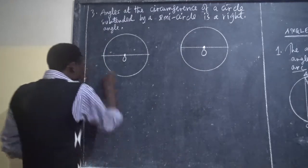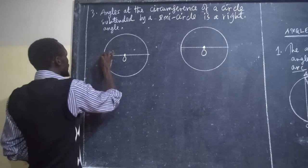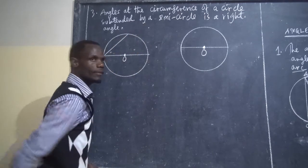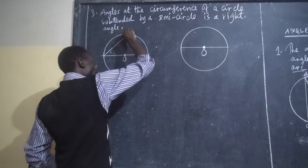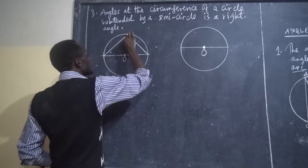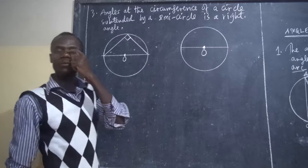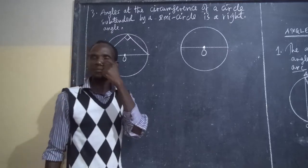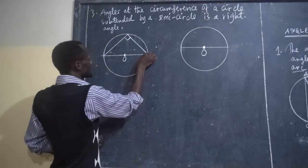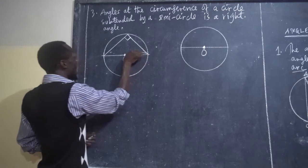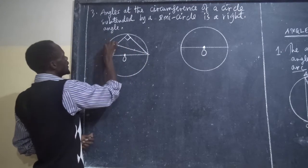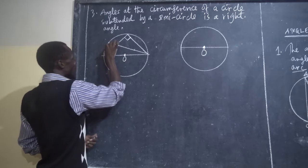If I draw a line from here and then join from here, the angle formed here is a right angle. If I draw another line from here and join from here, this angle is again a right angle.